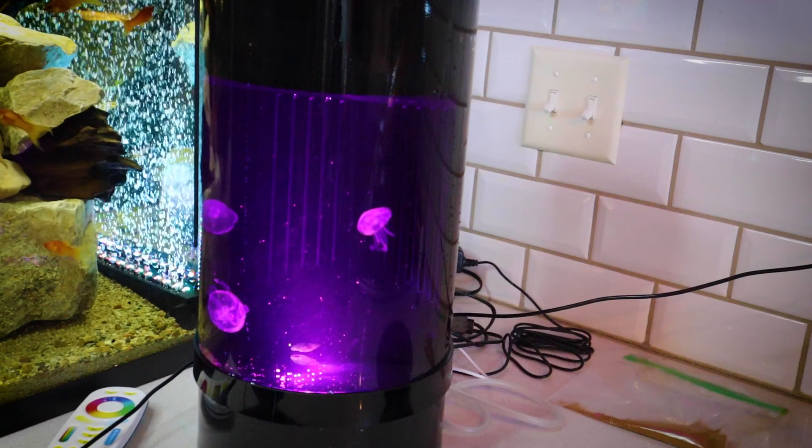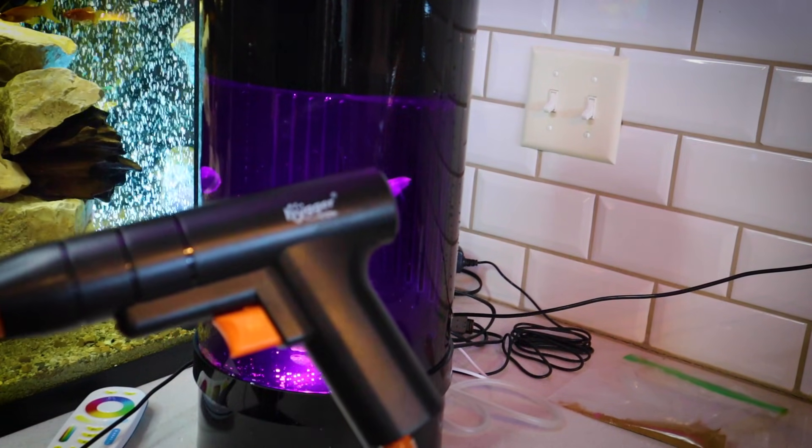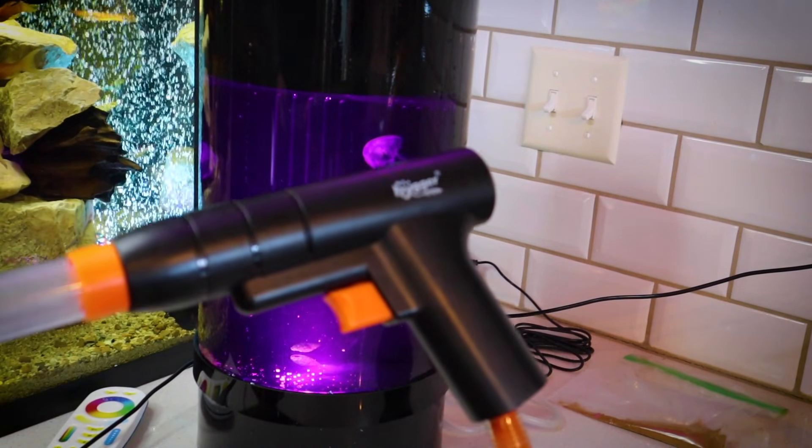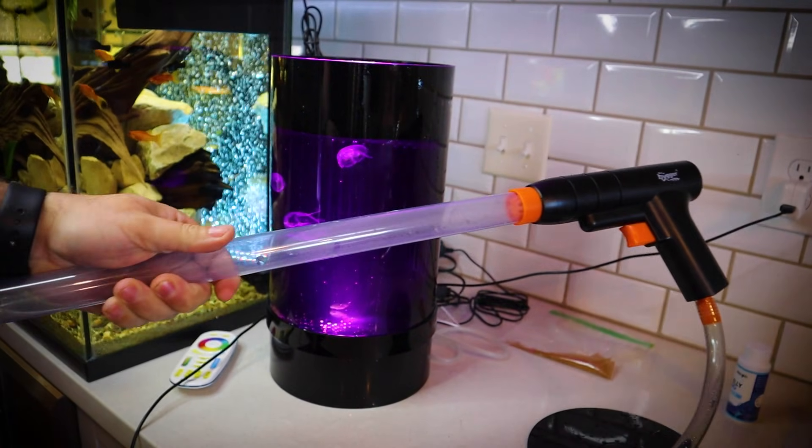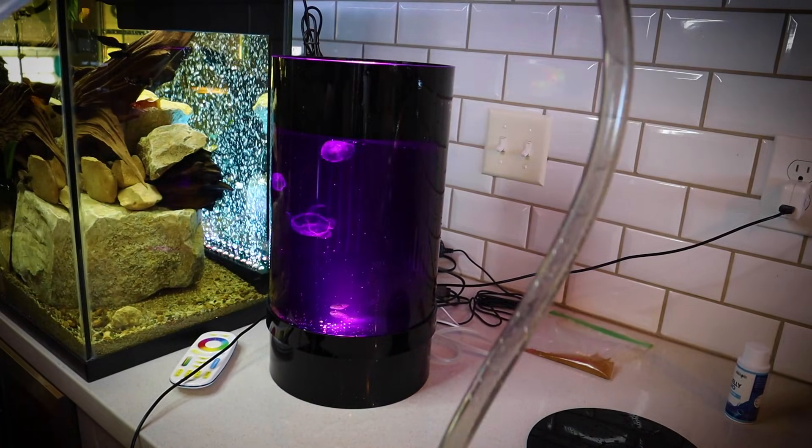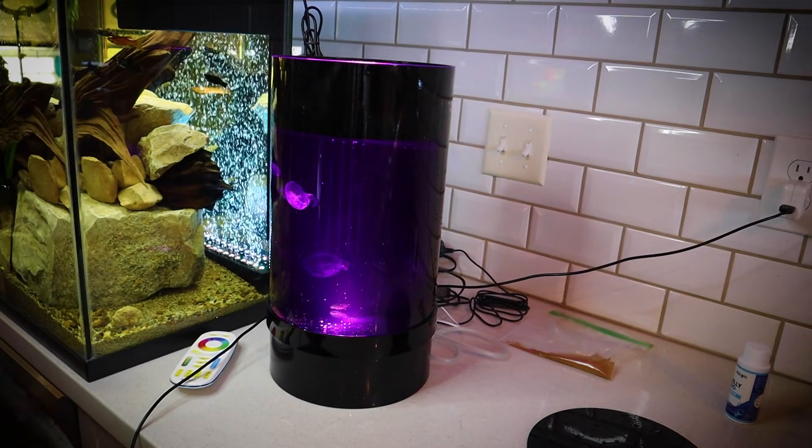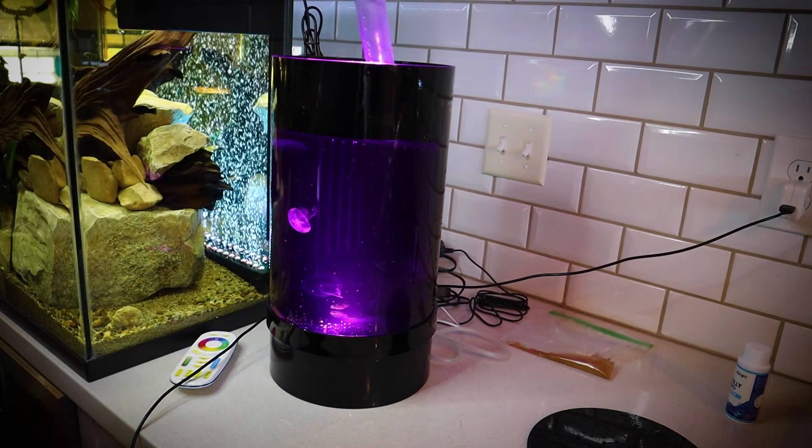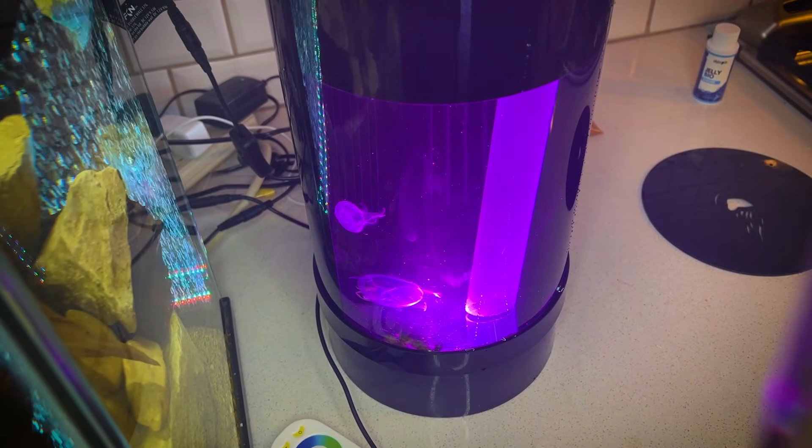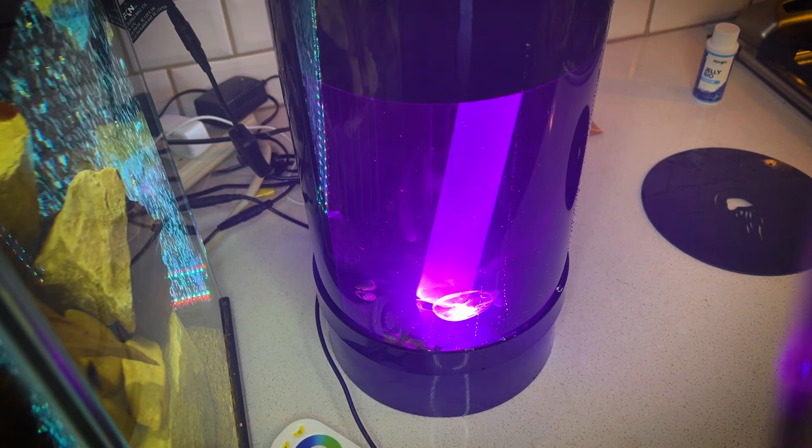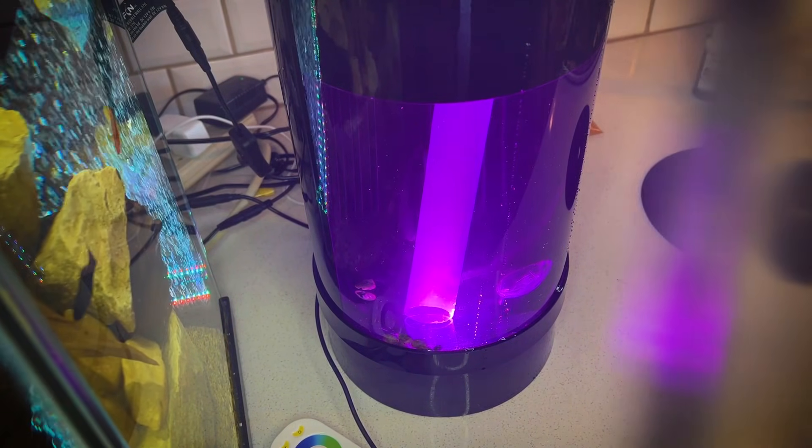What I'm going to use to drain this tank is this really cool product that my friends over at Hyger sent me. This is basically like a gravel vac gun, has a hose on the end that I'm going to drop into a 5-gallon bucket. This gun allows me to come in here and start using the trigger motion, and it will suck all of the stuff up off the bottom. You want to make sure that you don't suck up your jellyfish.